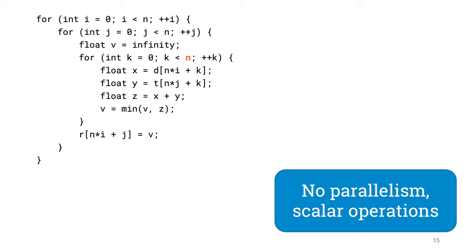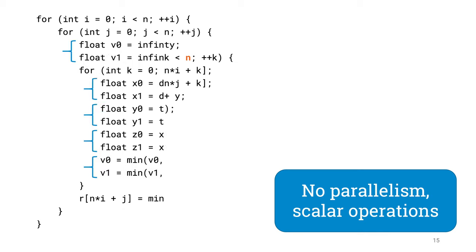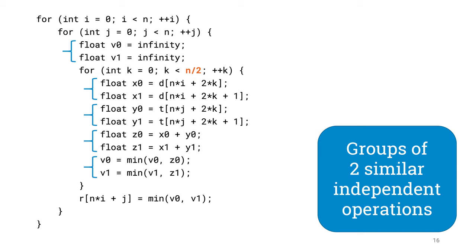Here is an example. Recall our sample application: in the innermost loop we do plain old scalar operations — read a float, read another, compute the minimum. We do this n times in the innermost loop. Could we somehow benefit from vector operations here? Let's first arrange some room for parallelism. Assume n is a multiple of 2. Here we have a version in which we accumulate two minimums, v0 and v1, and only combine the result at the very end. This is similar to what we did to get some instruction-level parallelism. The key thing is that we have now arranged code so that there are always pairs of similar independent operations.